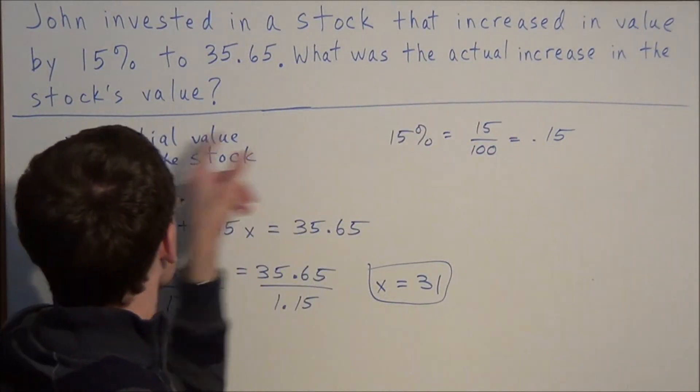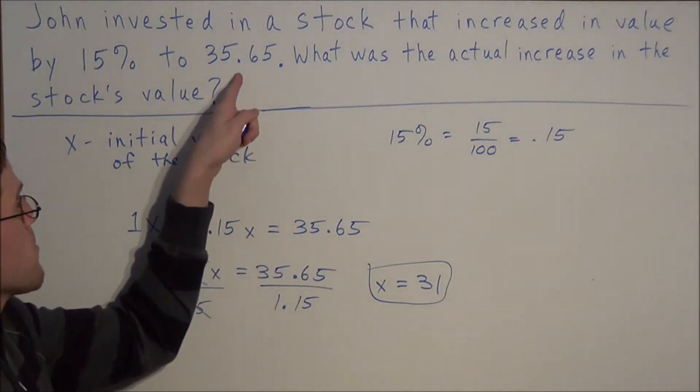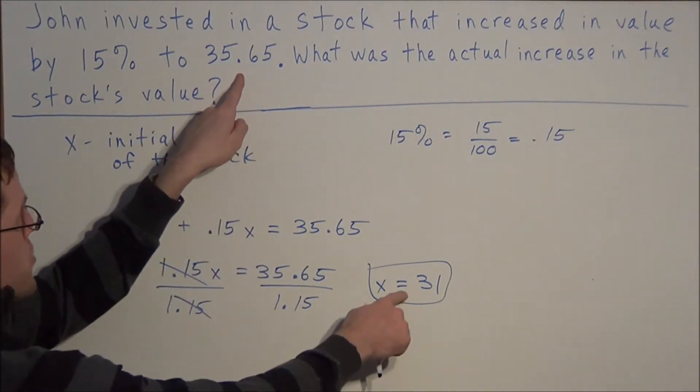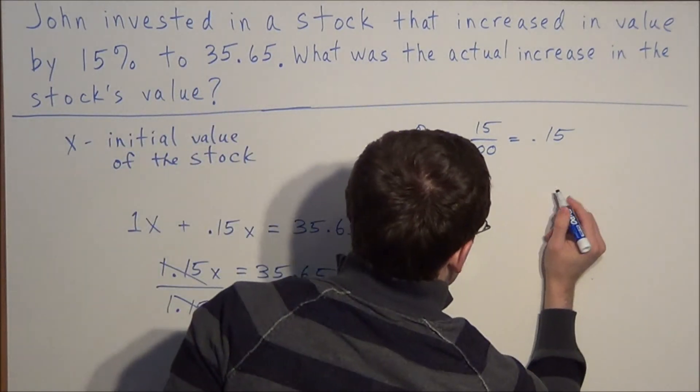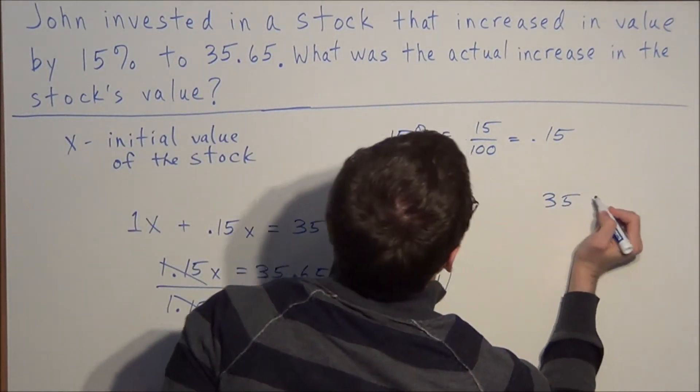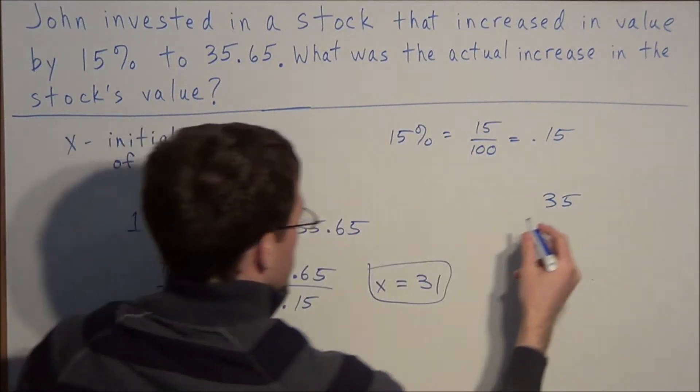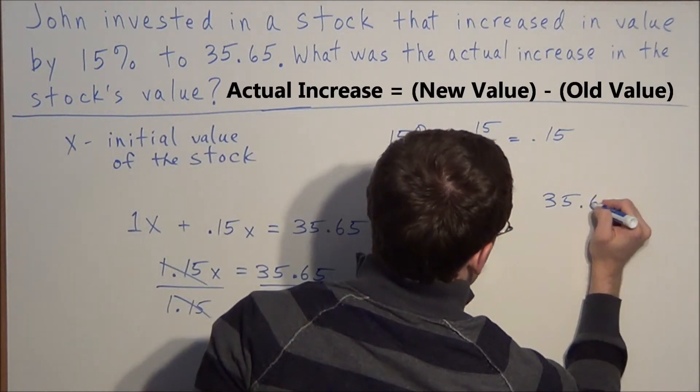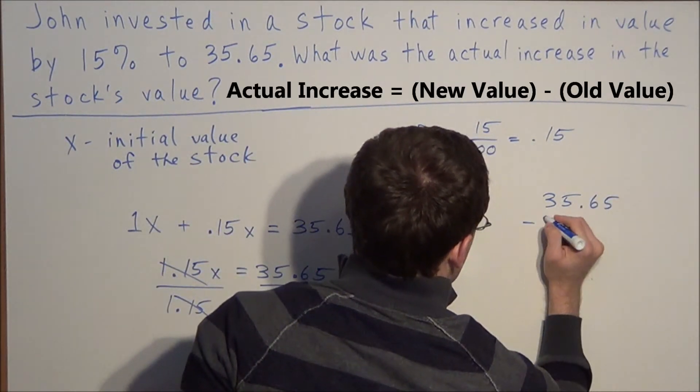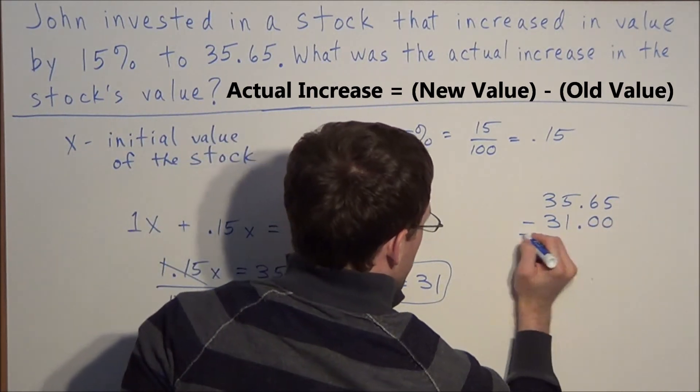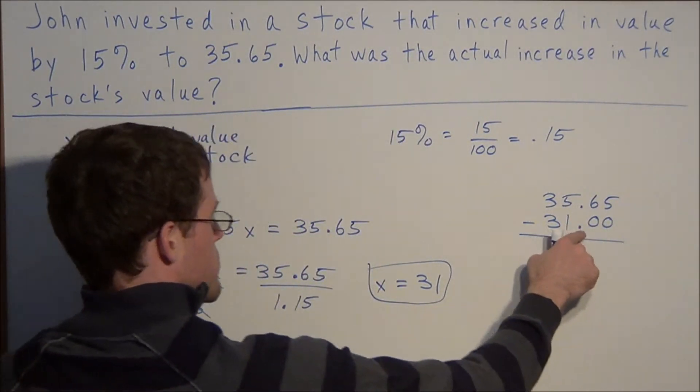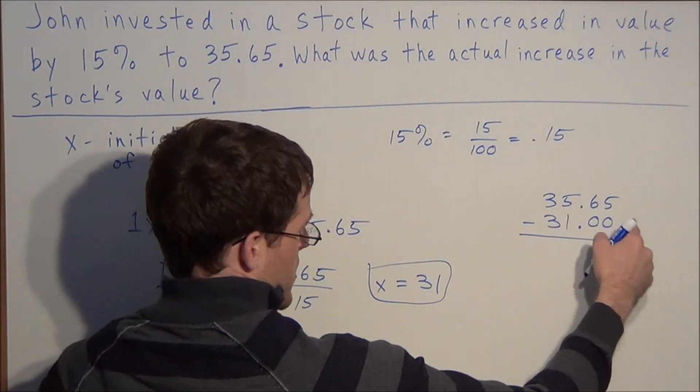So if we want to find the actual increase in the stock's value, how much did it change from 31 to 35.65? To find the difference, or the increase in the stock's value, we're going to do 35.65 minus 31. Now you can punch this in a calculator, or if you want to do it by hand,